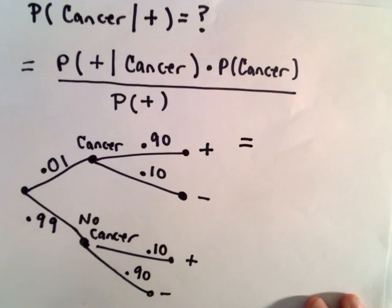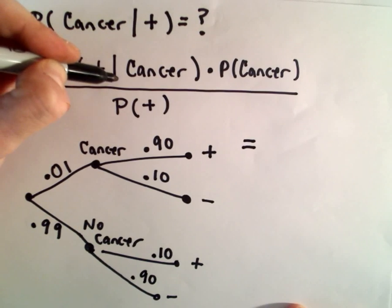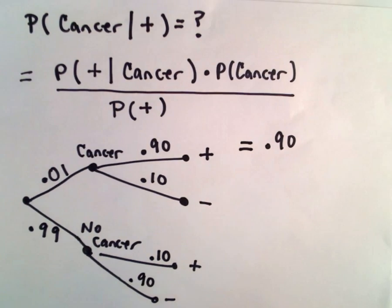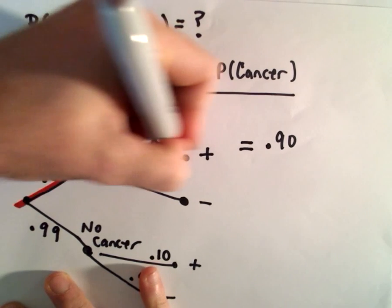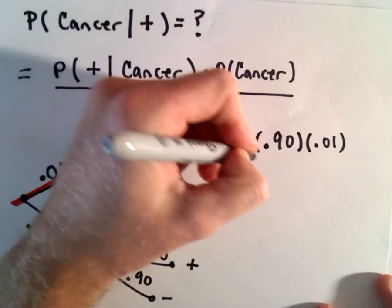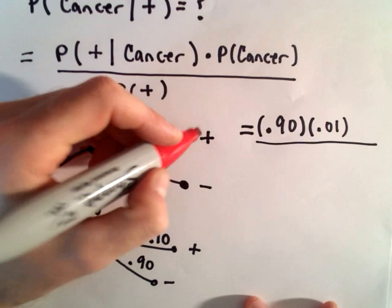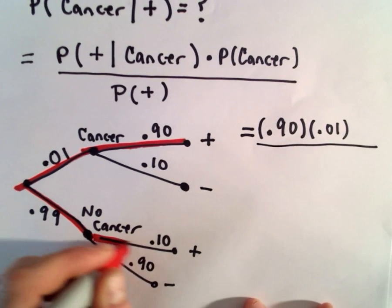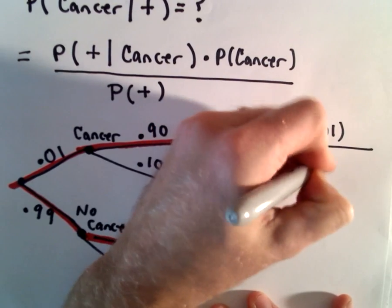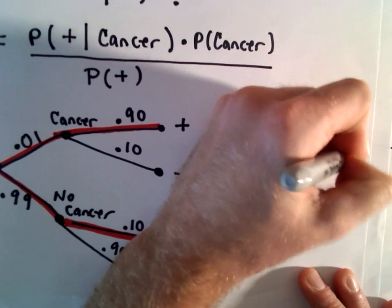Now we just fill in these values. The probability that you test positive given that you actually have cancer is 0.9 — that's our very top branch. We multiply that by the probability that someone has cancer in the first place, which is 0.01. In the denominator, we figure out the probability that you test positive by following all the branches out to where you test positive. We multiply the values along the respective branches and add them together: 0.99 multiplied by 0.10.